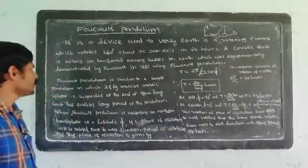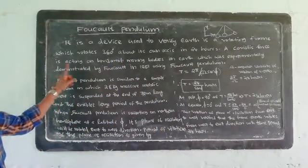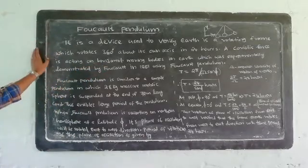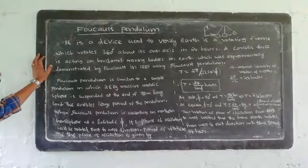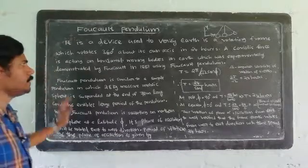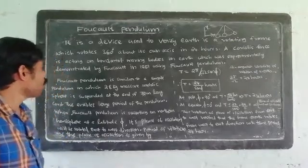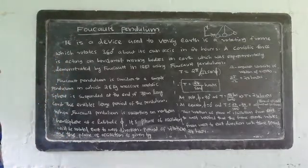This is what we call Coriolis force acting on horizontal moving bodies on Earth, which was experimentally demonstrated by Foucault in 1851 using the Foucault pendulum. After this experiment, in 1851, Foucault's name was given to this device.